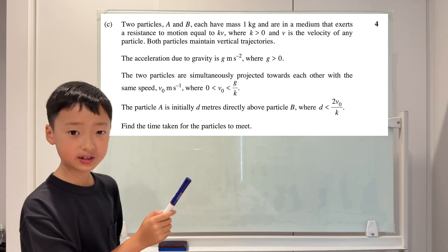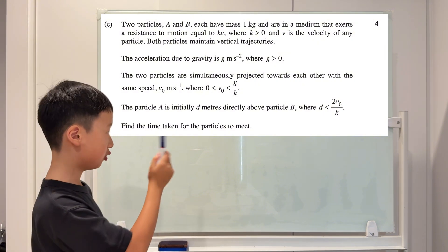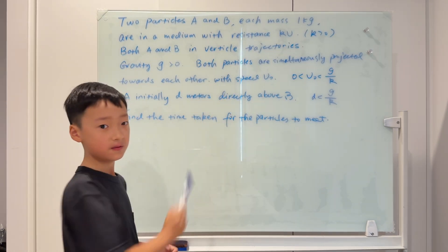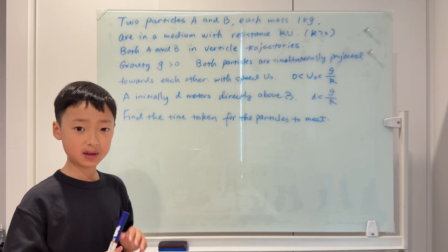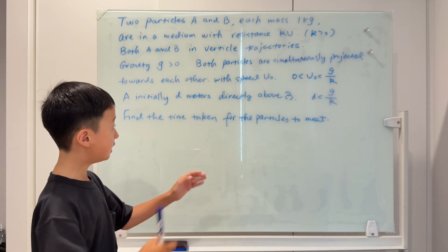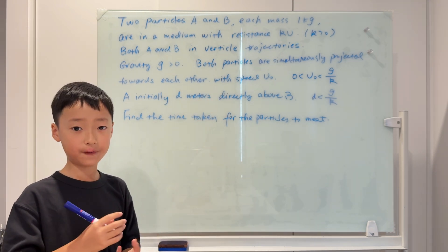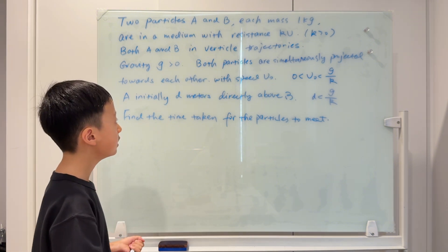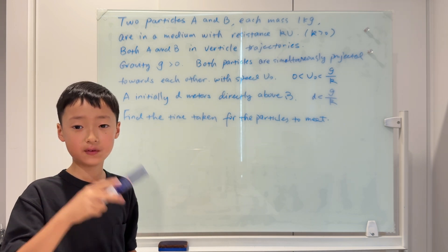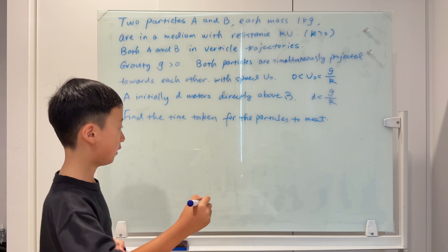The question asks us to find the time taken for the particles to meet. Note that the question says 'speed V0', not velocity. Velocity means directions are already included, but speed means we have to define the directions ourselves. So we'll make up positive and down negative — that's what we will do.